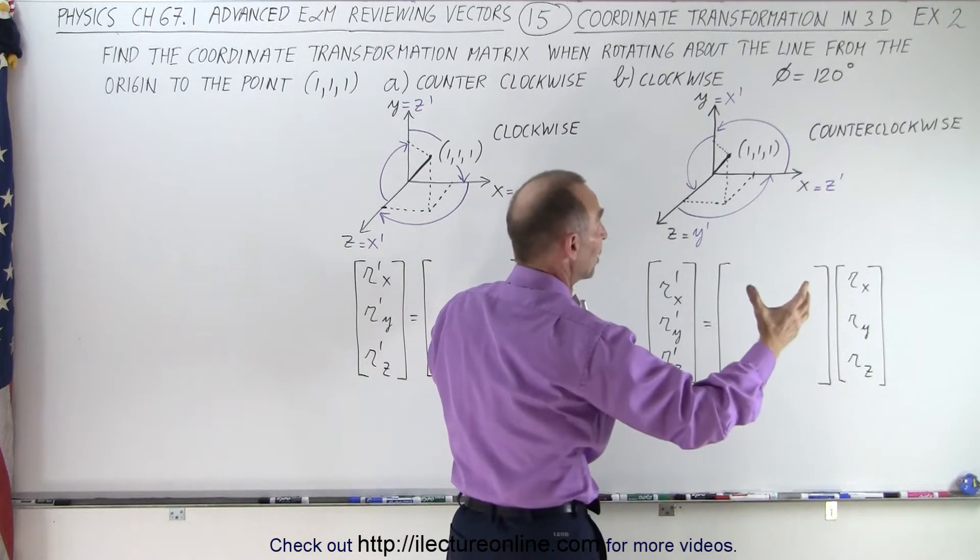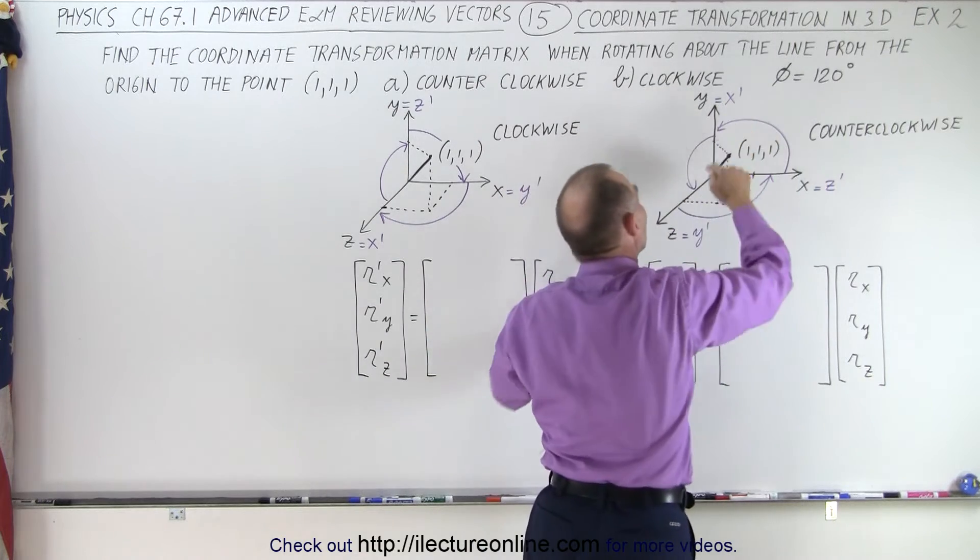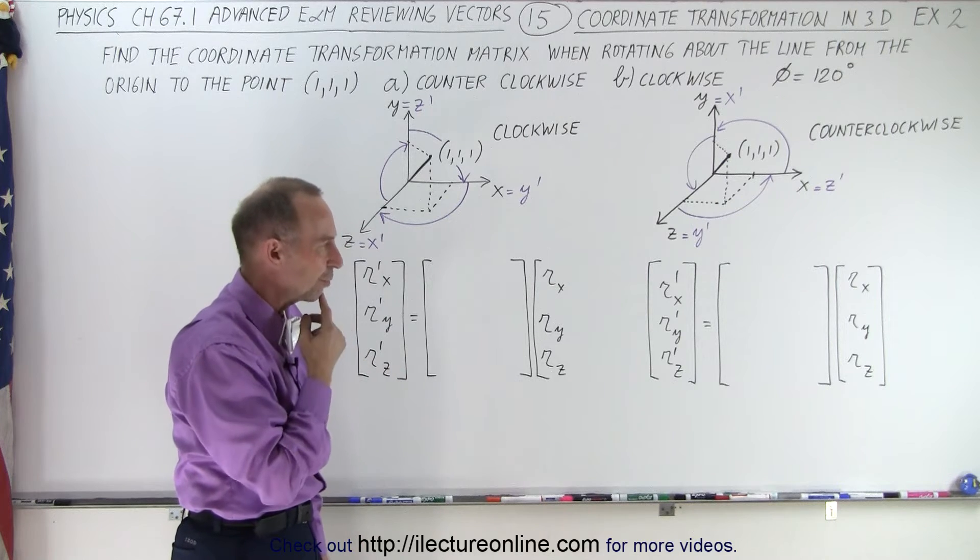So 120 degree rotation about this line will take all the axes and put them in the new axis locations like that. So that should be a fairly easy transformation.